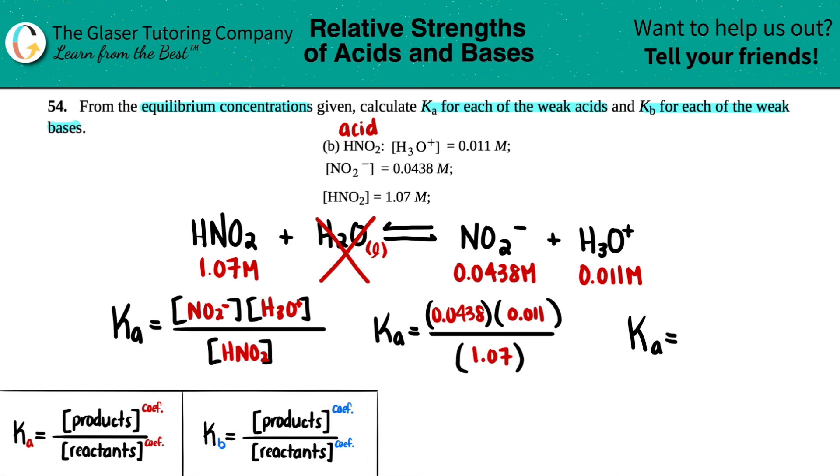Let's see. So 0.0438 times 0.011 divided by 1.07. And it looks like three, actually two sig figs for hydronium. So we'll give two sig figs back 4.5, 4.5 times 10 to the negative fourth.